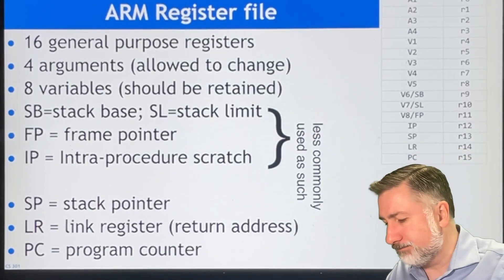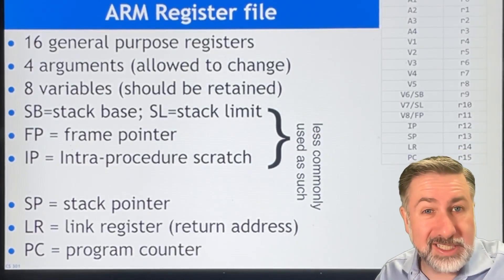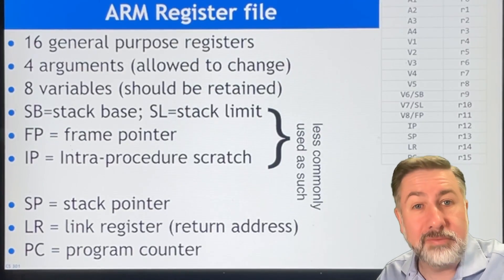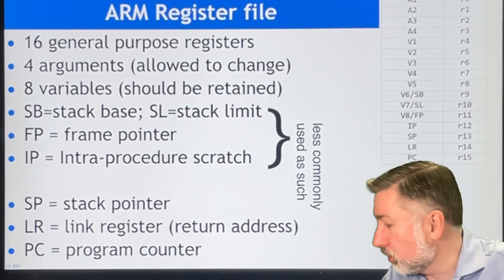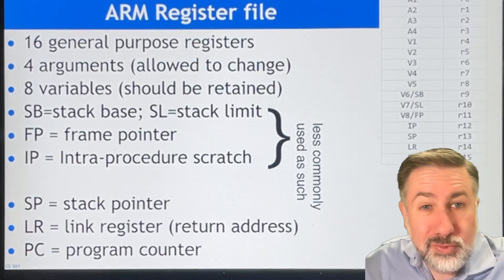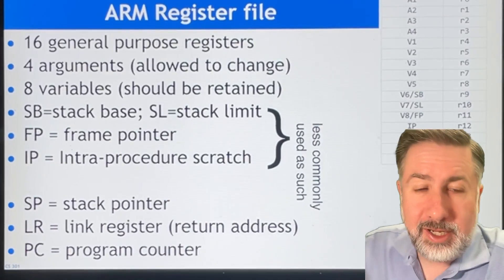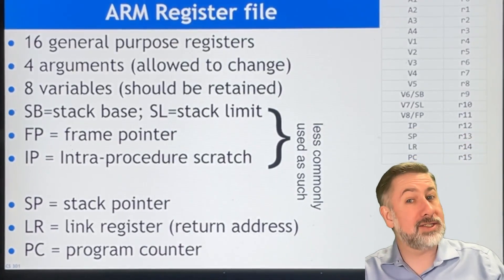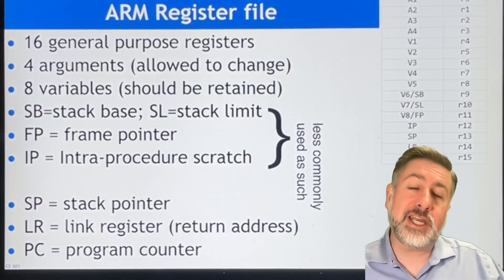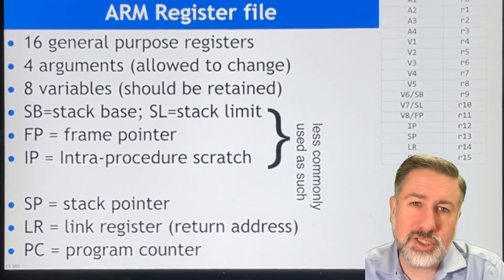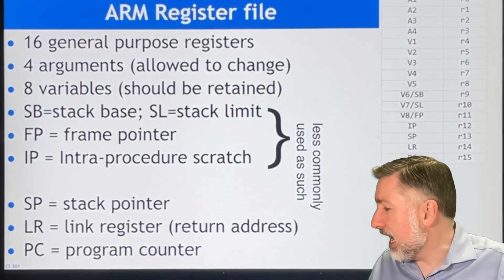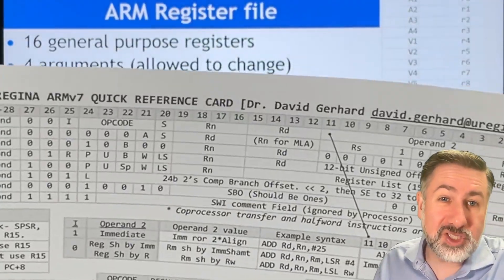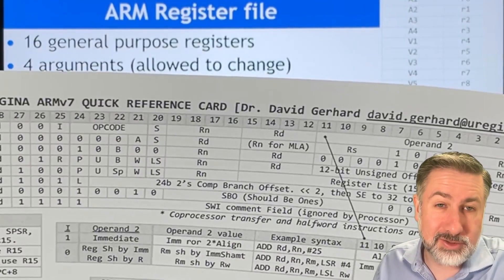The ARM model is actually a little simpler than the MIPS model. MIPS has 32 registers that the programmer can access, while ARM only has 16. These design decisions are based on how much of the instruction you want to take up with specifying registers.